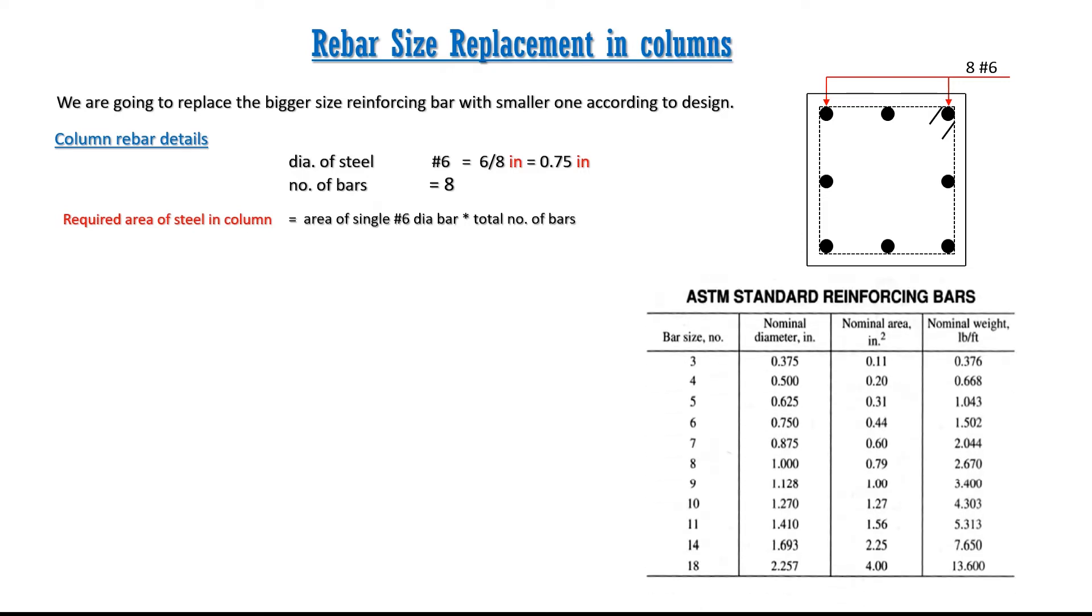Table in the right side is showing the bar size, diameter, cross sectional area and weight per unit length of different sizes of bars. Area of number 6 diameter bar is 0.44 square inches. Multiply this area with 8 number of bars, we get 3.52 square inches the overall designed area of steel.